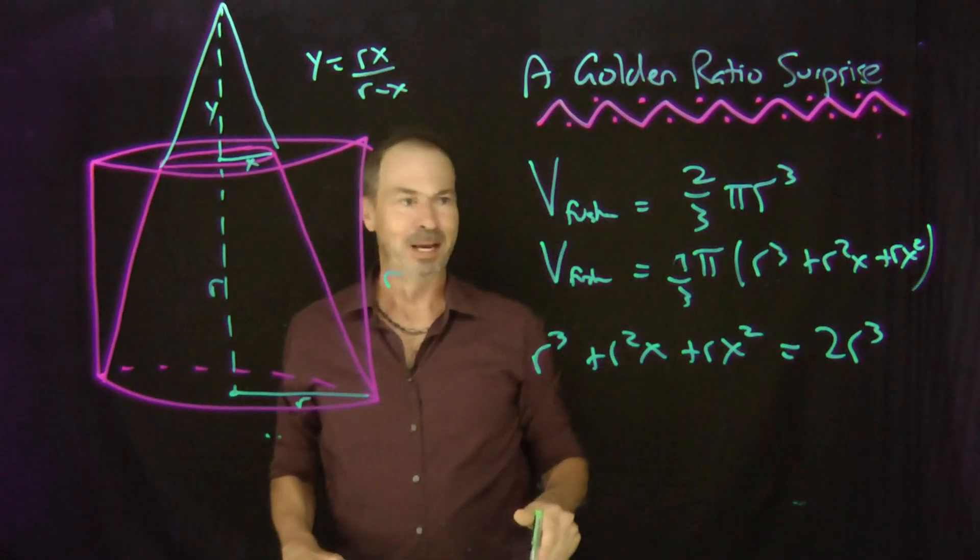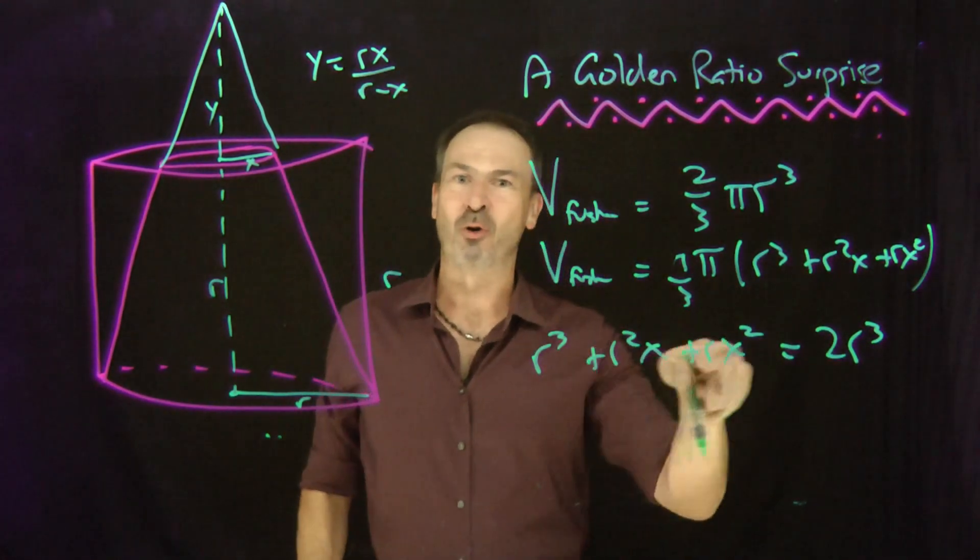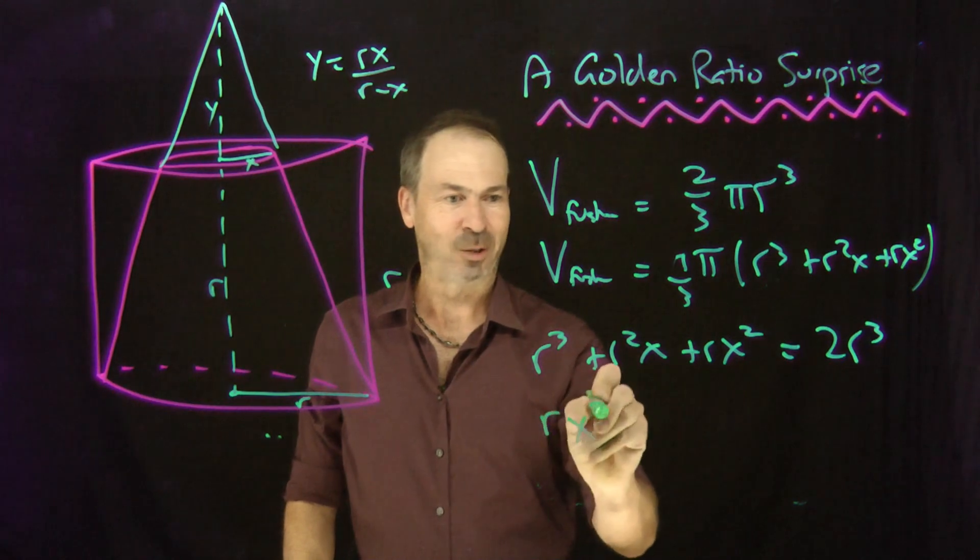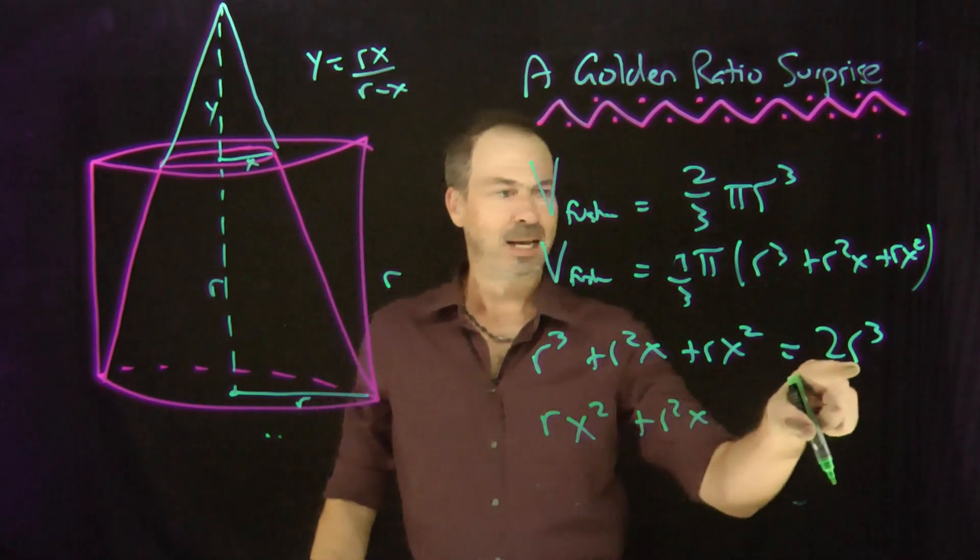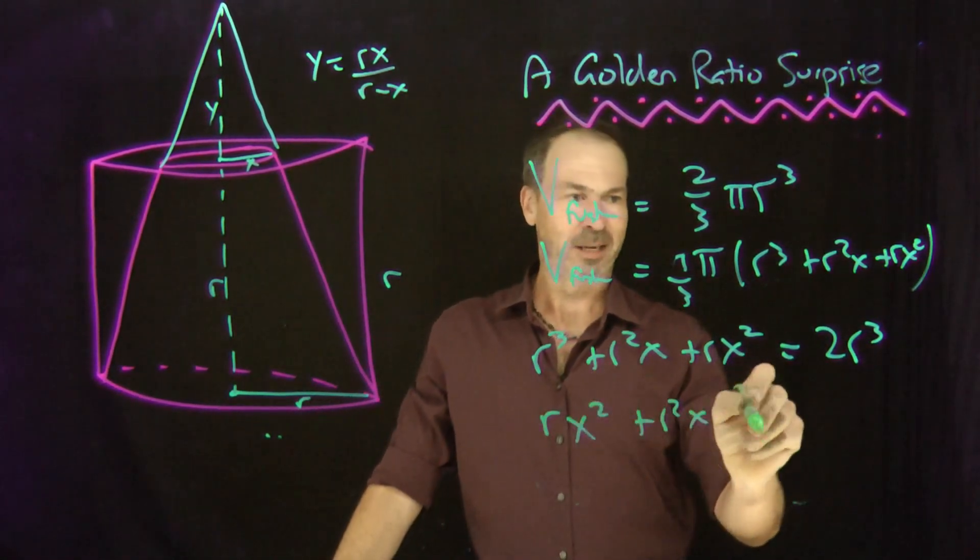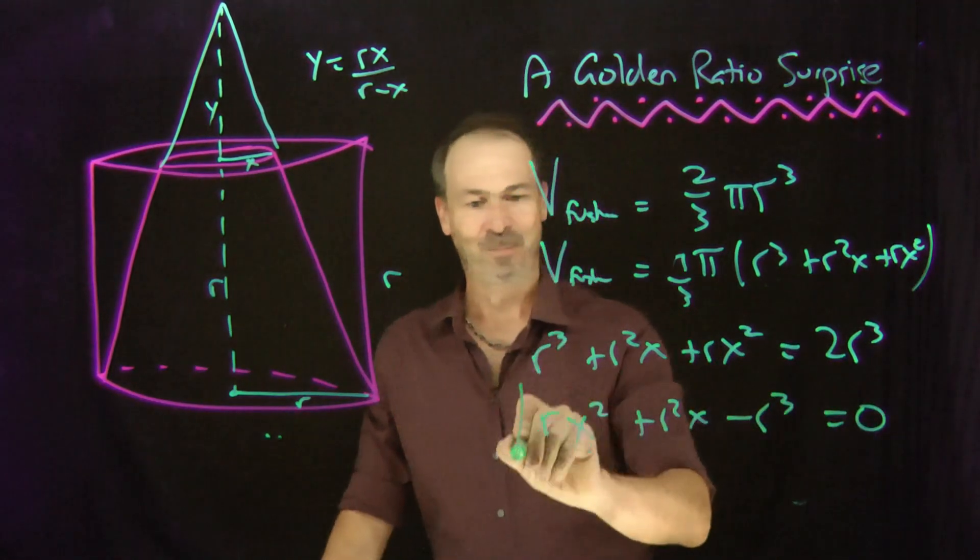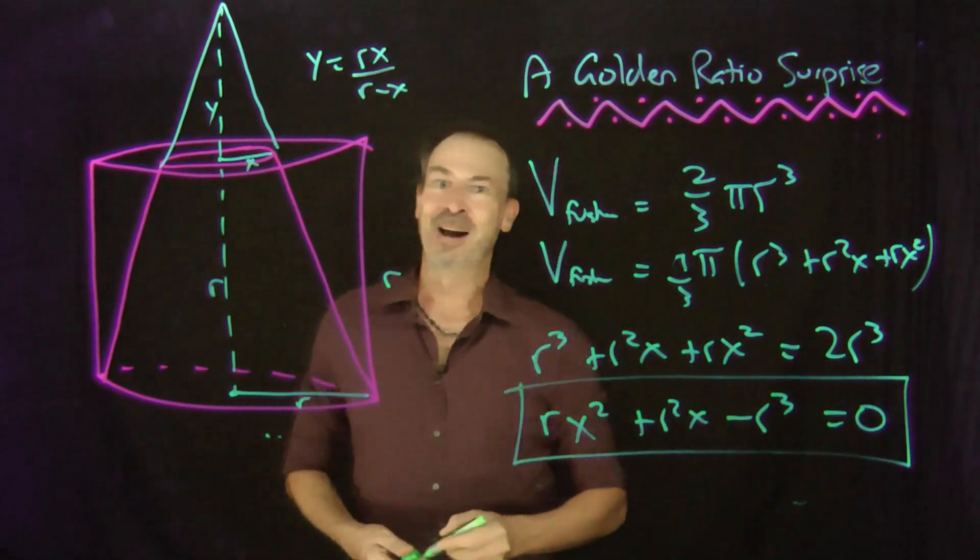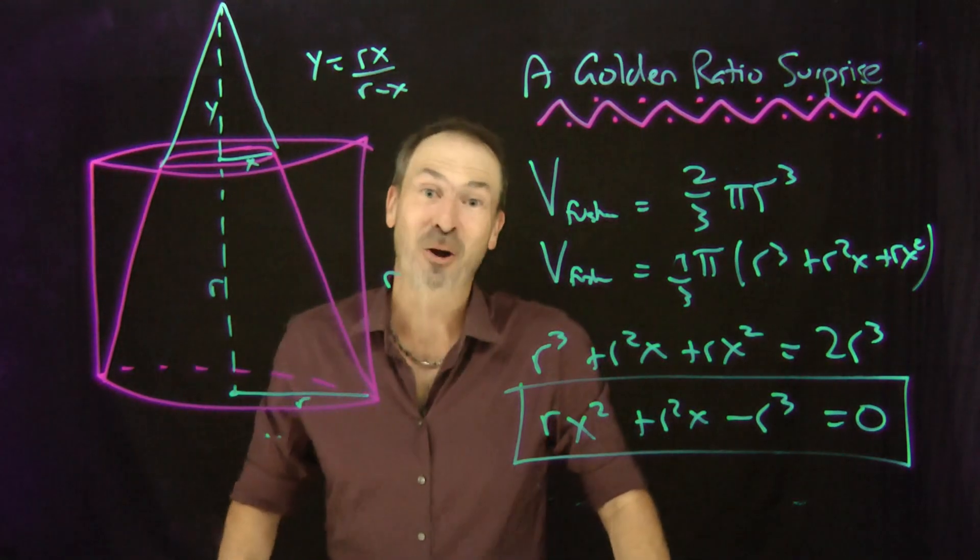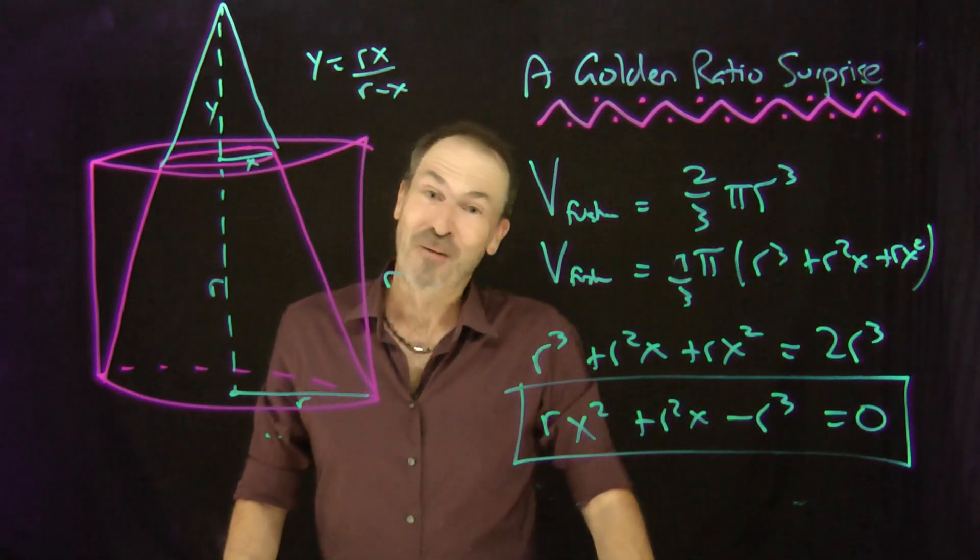Bingo! It must be 2r cubed. Which means I've got a little quadratic formula in x. r x squared plus r squared x. 2r cubed and r cubed means I've got minus r cubed equals zero. Equals zero. Alright, so just a quadratic formula. Solve for x. And if you solve for x, you'll be in for a really interesting little golden ratio surprise.